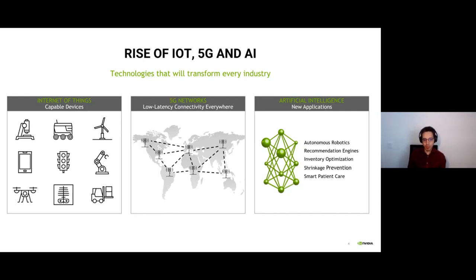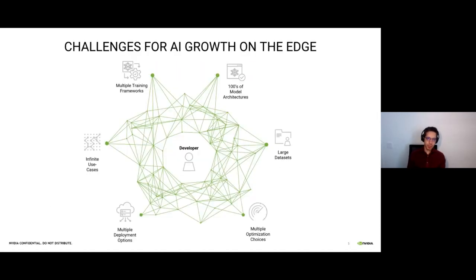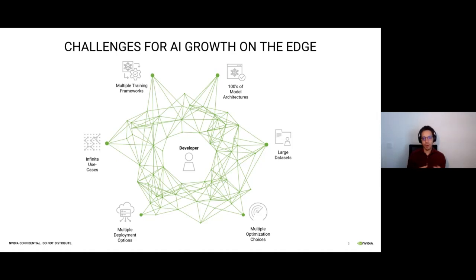But when we try to build an edge AI system, we are usually faced with different problems. If we think about the challenges when it comes to building an edge AI system, we find they are mainly around six components — whether you are a developer, CTO, product manager, or project manager, you will face these challenges.